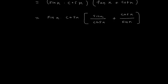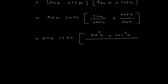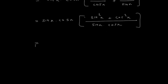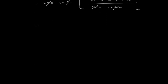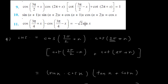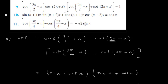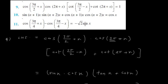Now sin x into cos x into tan x plus cot x. Writing tan x as sin x upon cos x and cot x as cos x upon sin x, then cross-multiplying gives sin x into cos x times sin square x plus cos square x upon sin x into cos x. Since sin square x plus cos square x is 1, and sin and cos cancel, this equals 1, which is your RHS. So LHS is equal to RHS.